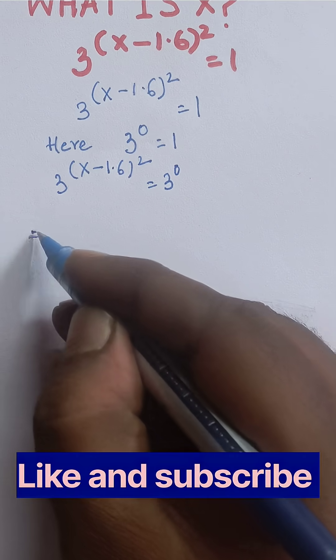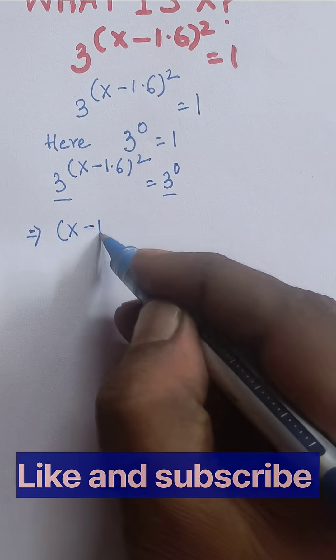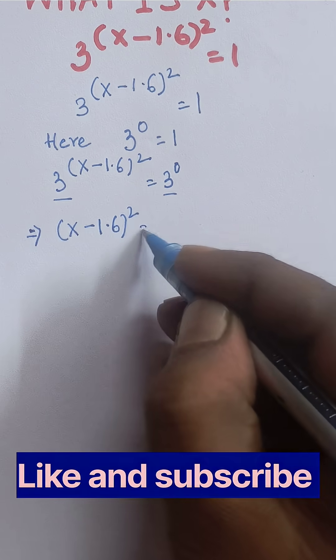Here, the bases are equal. So we can reduce the expression like (x minus 1.6) whole square is equal to 0.